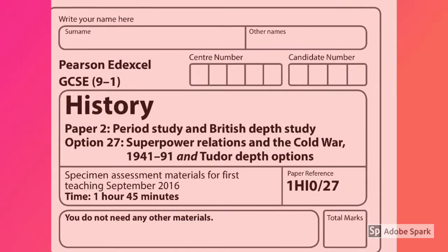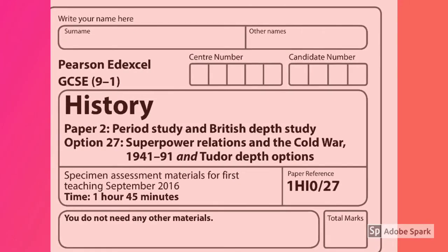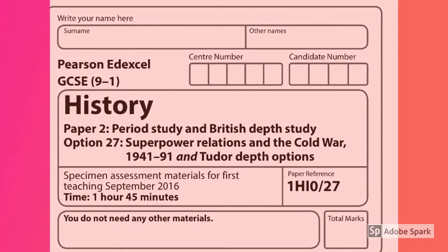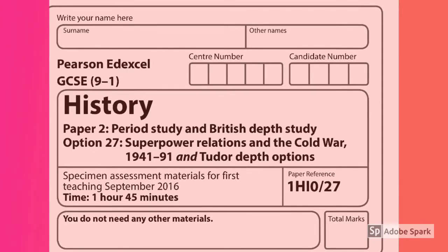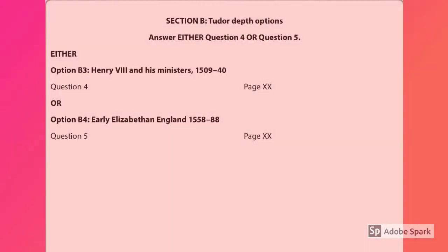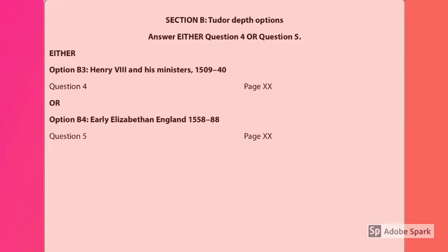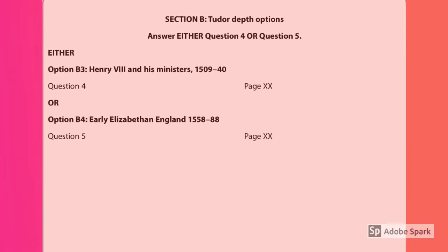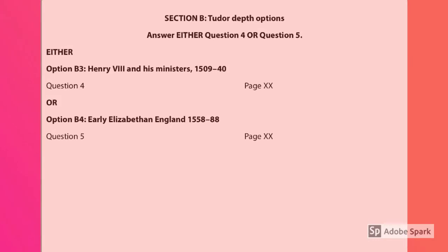You have 1 hour and 45 minutes to complete this paper. Remember there are two sections to this paper. We look at Elizabeth and the Cold War. However, be very careful when you first open your paper. It's quite likely that the first section you will open will be Cold War, and then your second section you'd have a choice of two different topics. We have only studied Elizabethan England, therefore you only answer questions on this topic.